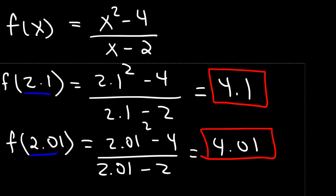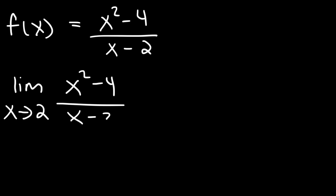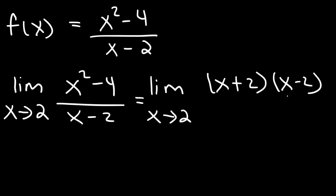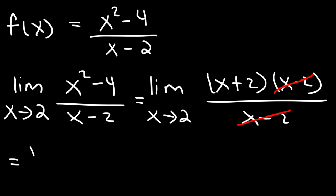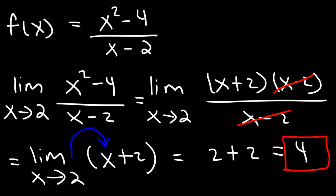So we can use a limit expression. The limit as x approaches 2 of (x squared minus 4) over (x minus 2) equals 4. To show your work, factor x squared minus 4 using the difference of squares method: that's (x + 2)(x − 2). We can cancel the (x − 2) factor, leaving the limit as x approaches 2 of (x + 2). Now we can use direct substitution: 2 plus 2 equals 4. So as x gets closer and closer to 2, f(x) approaches 4.